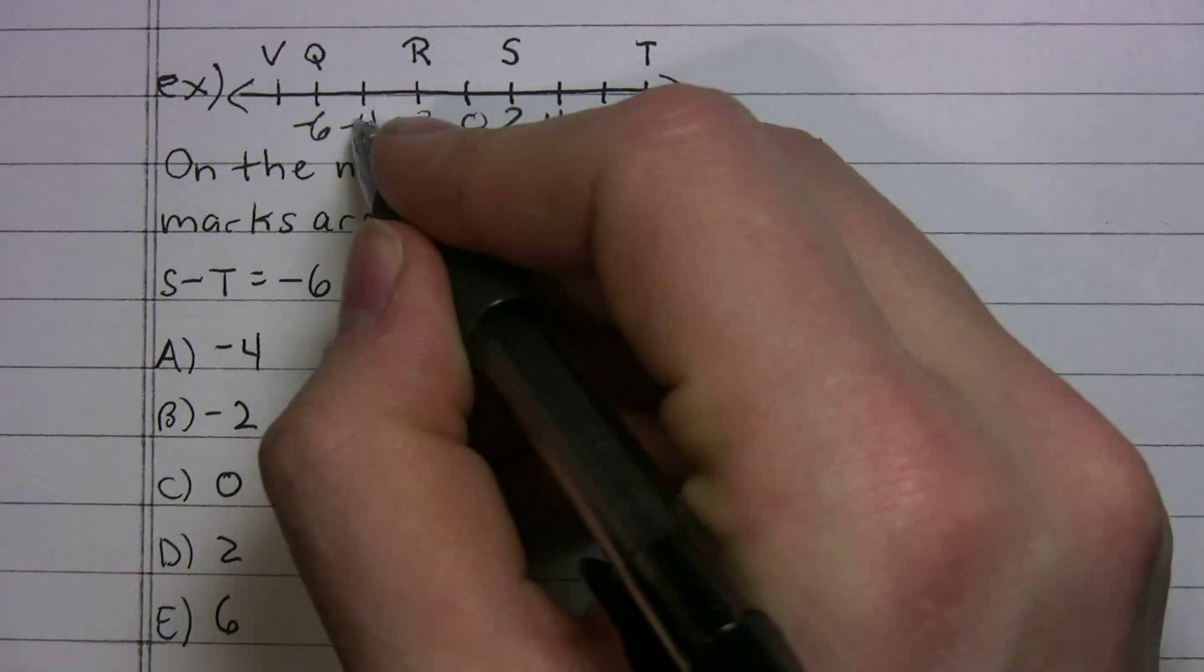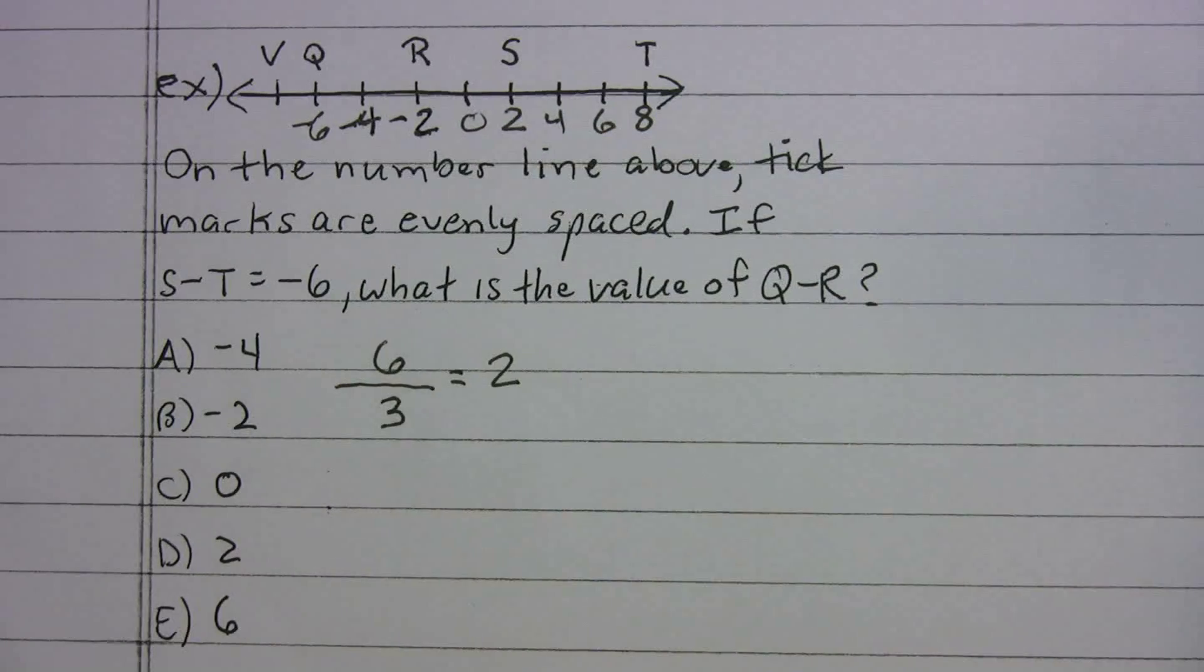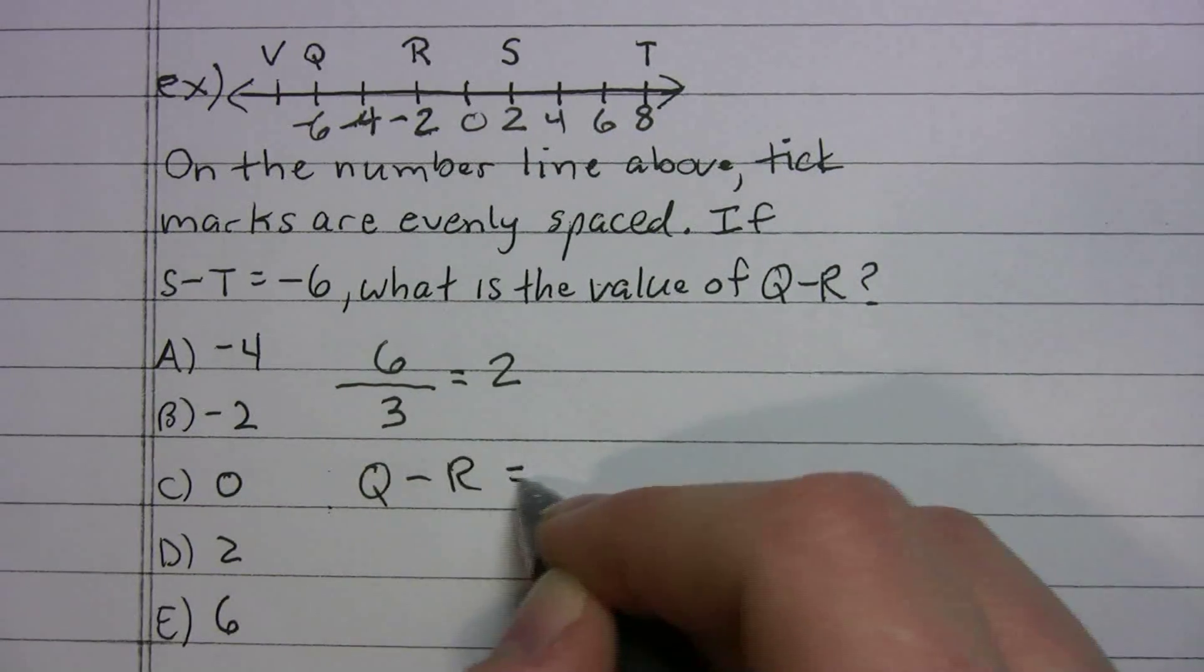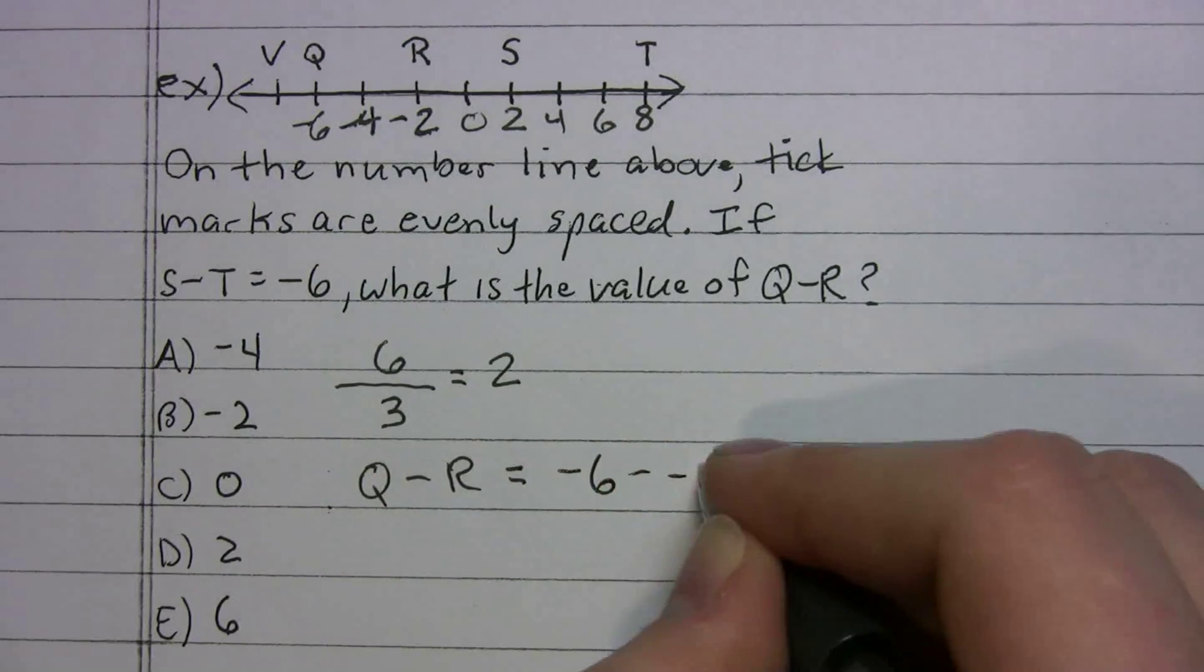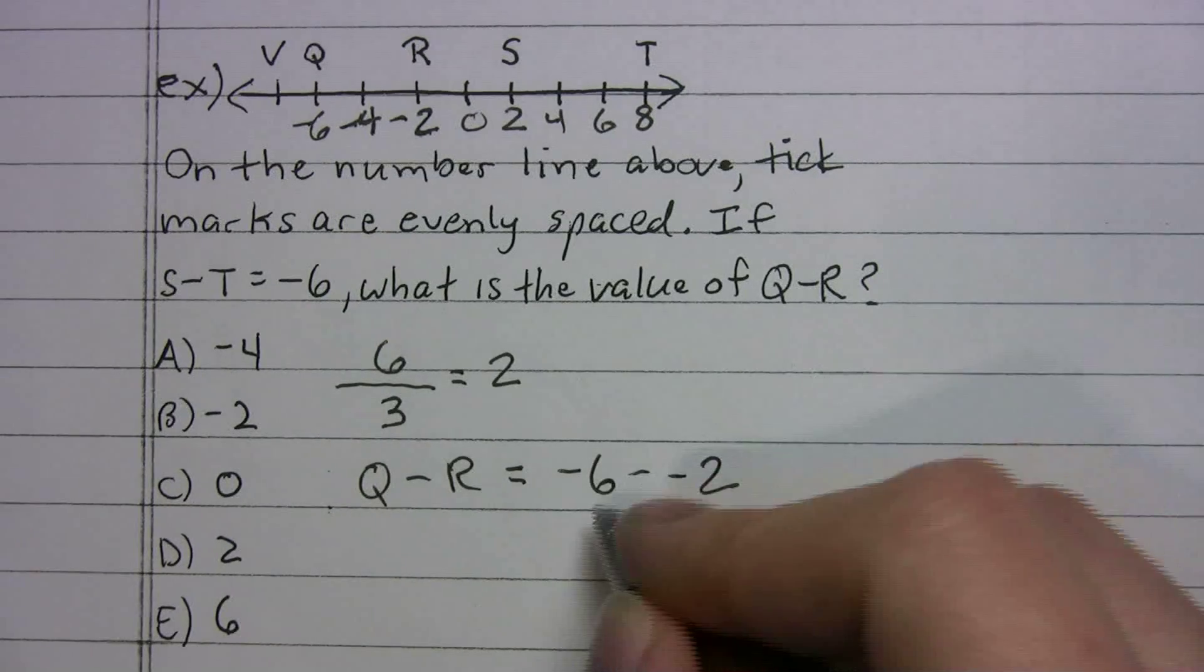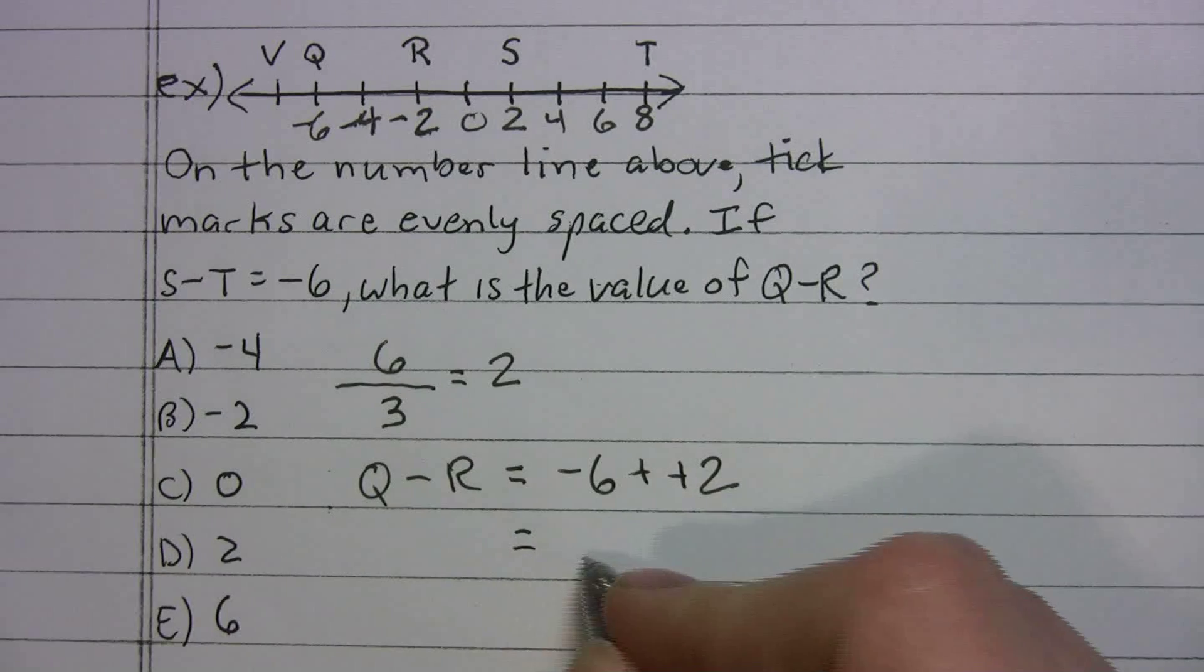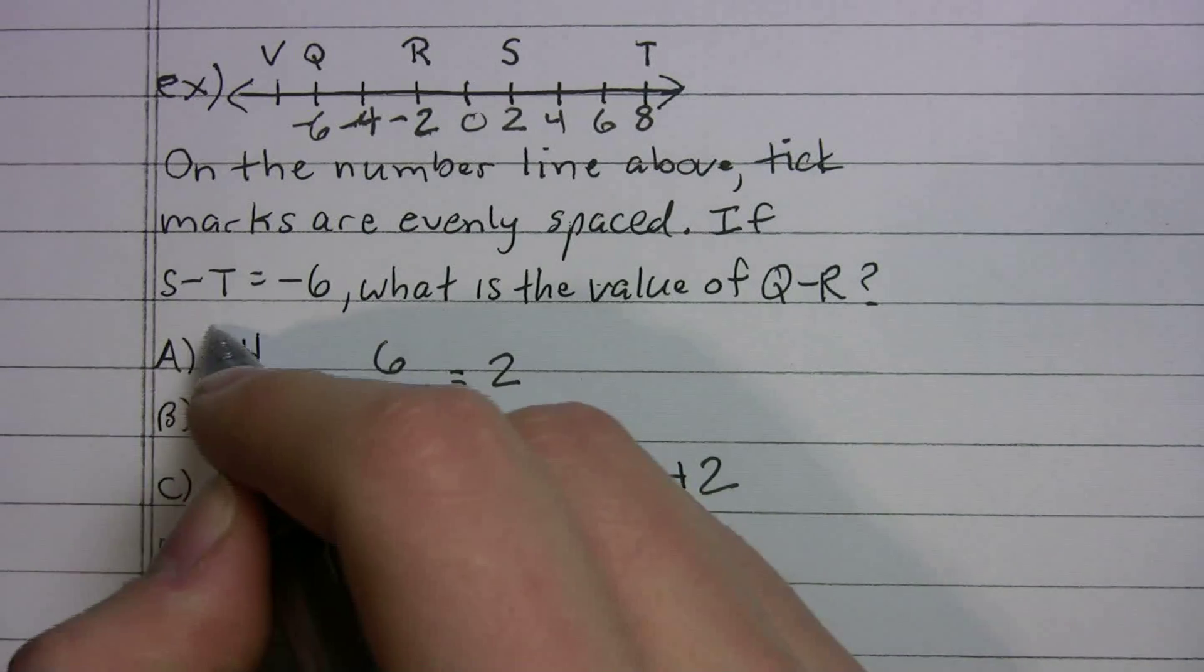Let me just darken that in so you can see it a little bit better. And now all I'm doing, I want to find q minus r. So that's going to be negative 6 minus negative 2. We're going to keep, flip, change, grand total of negative 4. Choice A.